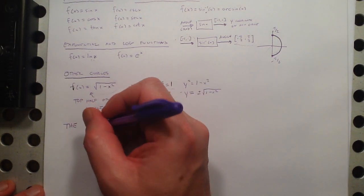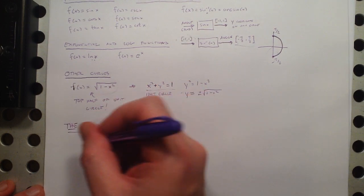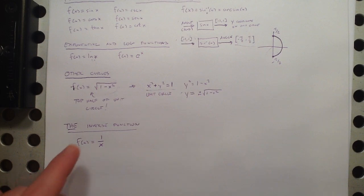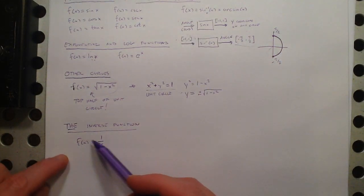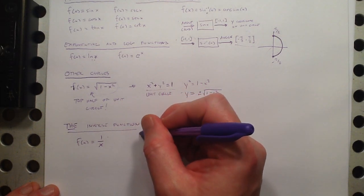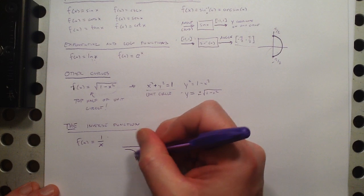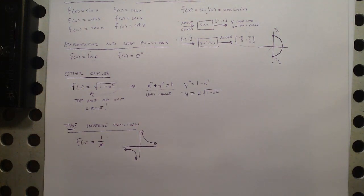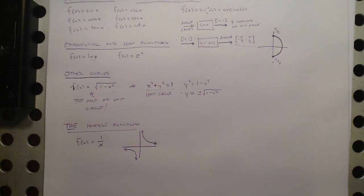We're also talking about the inverse function f of x equals 1 over x. This is inverse in a different sense — we're just taking whatever x value you put in and flipping it over. What does that look like? If we graph y equals 1 over x, we get a hyperbola with the x and y axes as horizontal and vertical asymptotes. I think that's a pretty good catalog to start with of functions we want to be familiar with.